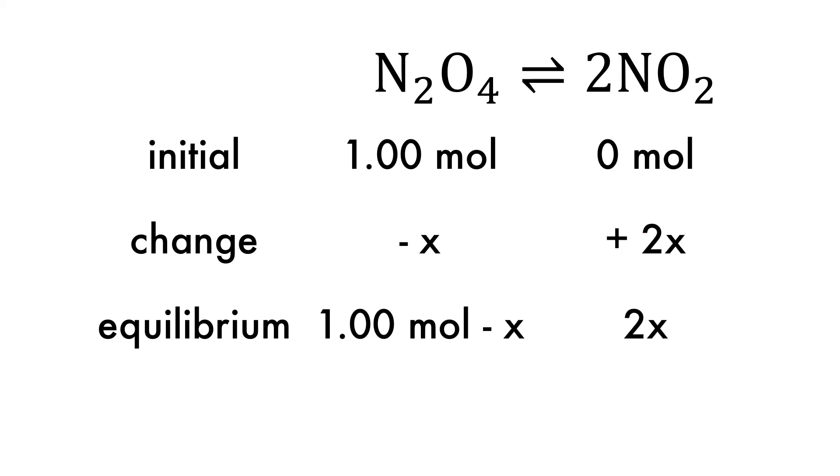Finally, the sum of the initial and the change is calculated to give the equilibrium amounts. For the reactant, this is 1 minus x, and for the product, the equilibrium concentration is 2x.